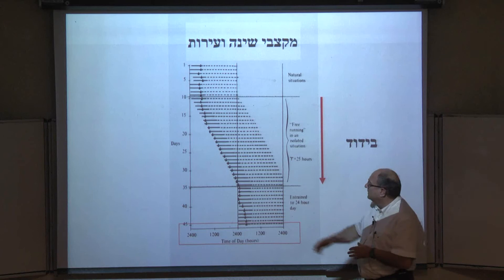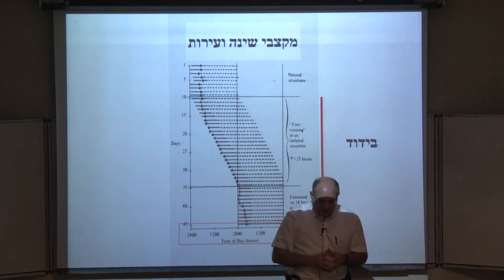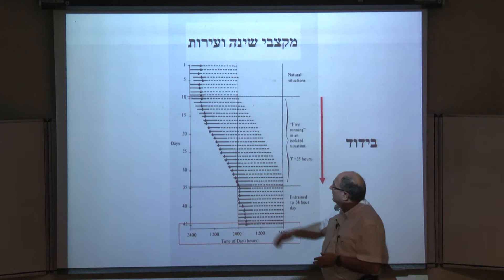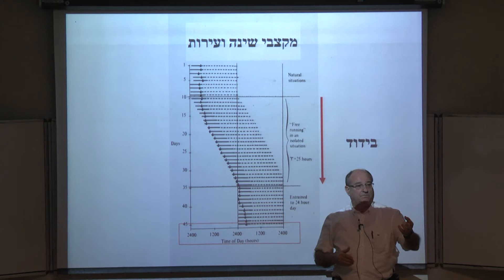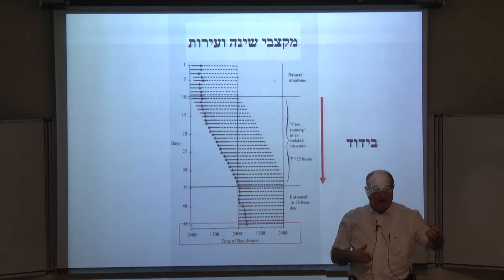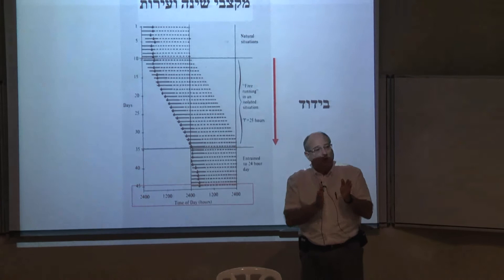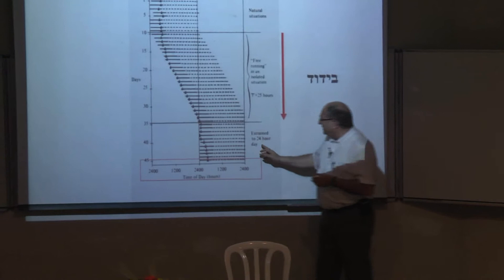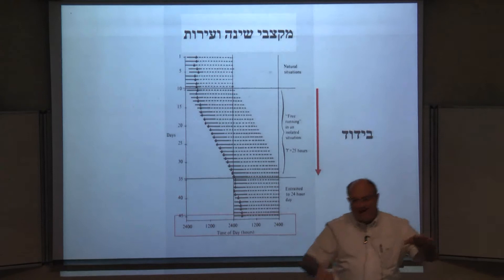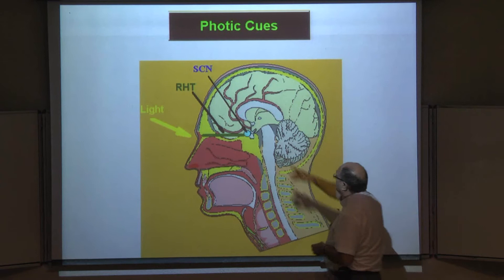When you take a normal person and isolate them from any time cues, from light-dark, from social cues, the sleep-wake cycle emerged as what we call a free-running cycle, longer than 24 hours. This is the endogenous circadian cycle. In recent years we know it's very close to 24, but when I was a student we believed it can be 25, 26, 27 and even longer.